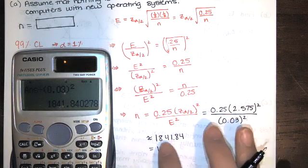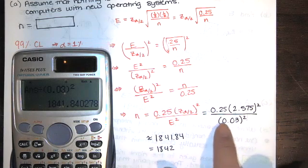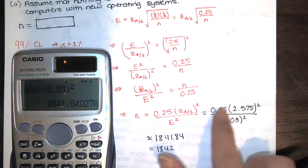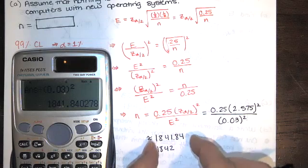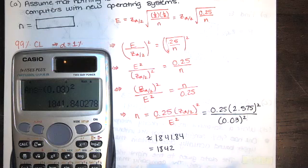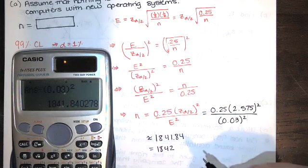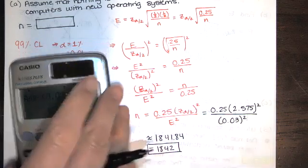But even if that were 1841.3, we always round up because we need the error to be no more than this value, which means that this n value has to be this value or something greater than that. So we're going to round up to the nearest integer. So we need a sample size of 1,842.